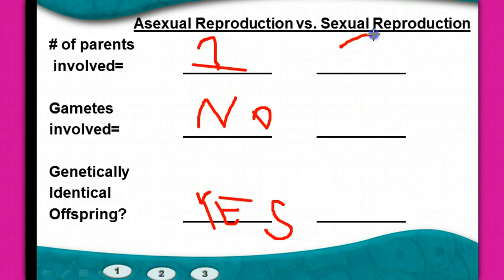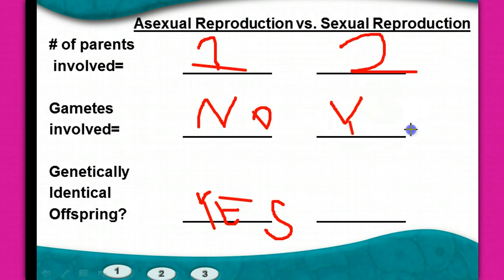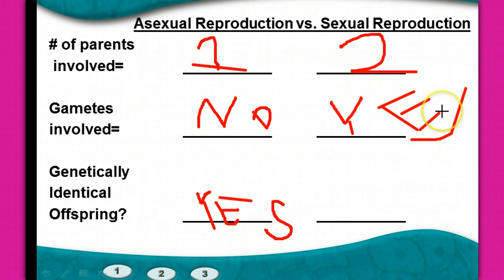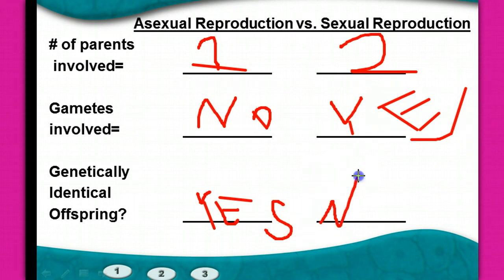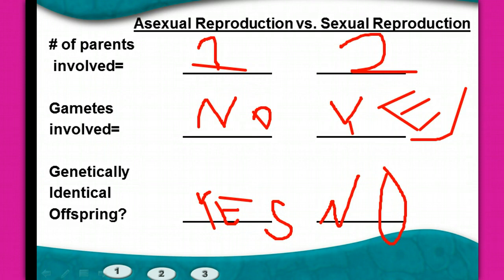In sexual reproduction, two parents are involved, gametes are absolutely involved, and the offspring are not genetically identical to the parents — you don't look just like your parents. That's the difference between sexual and asexual reproduction in organisms, so keep that in mind as we go into the next unit.